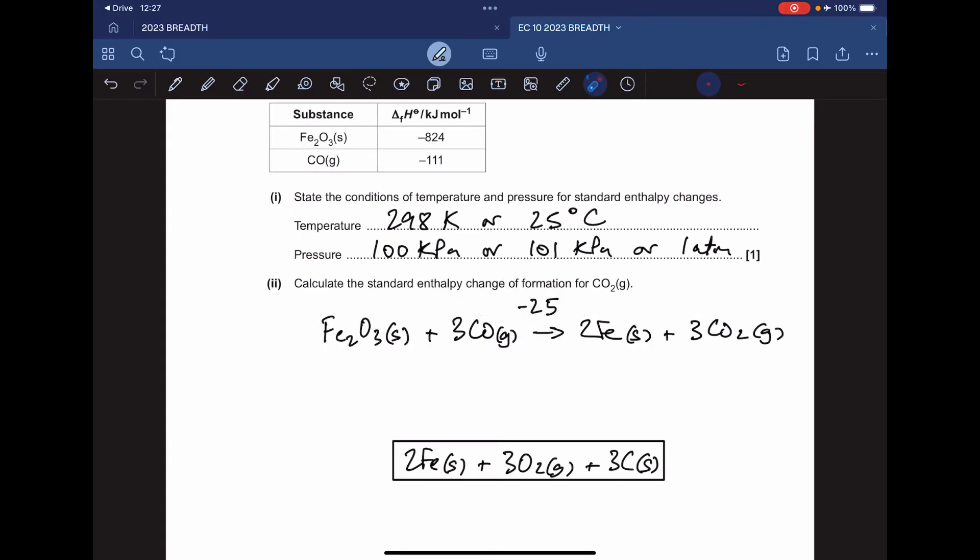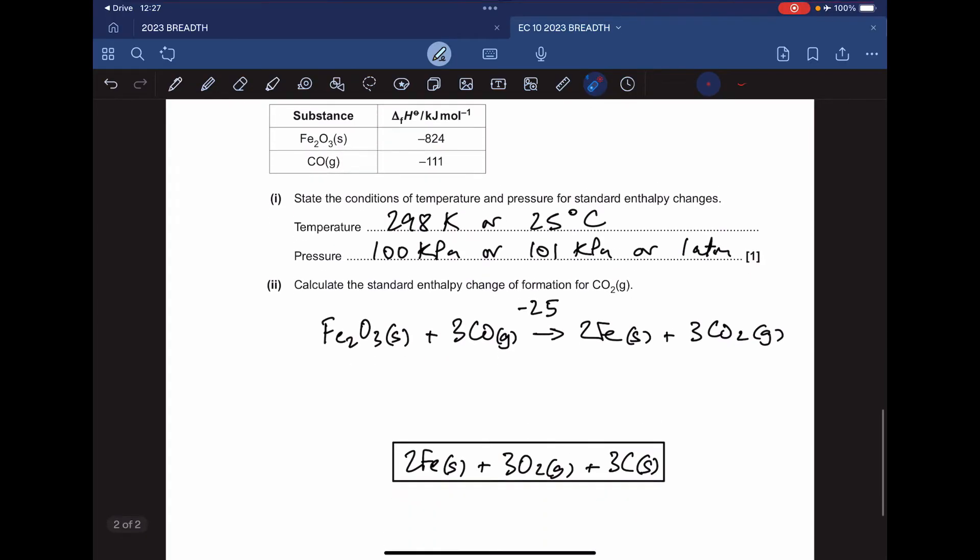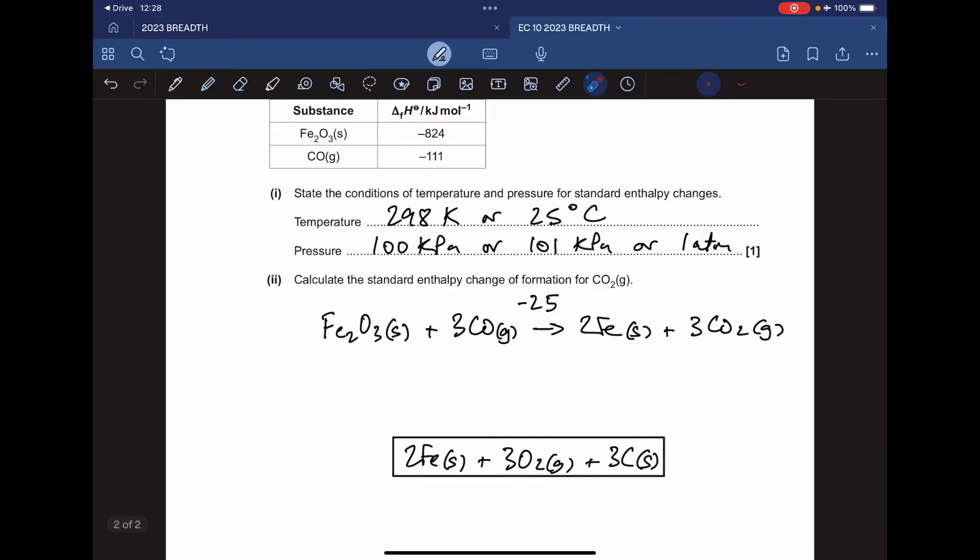Finishing off with the calculation, I'm going to do this using an enthalpy cycle rather than the shortcut way. There's the equation we've been given at the top of the question. The enthalpy change we're told was minus 25 kilojoules per mole. Because we've got enthalpy changes of formation, I'm going to draw what I call a formation cycle.